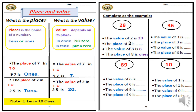Let's answer our workbook page thirty-one. The place is the home of a number — tens or ones. The value depends on its place: in ones, no zero; in tens, put a zero. The place of number seven in ninety-seven: seven is in the ones place. The value of seven in ninety-seven: seven in ones, so its value is seven — no zero in ones. The place of number two in twenty-five: two is in the tens place. The value of two in twenty-five: two in tens, so its value equals twenty — we put a zero.